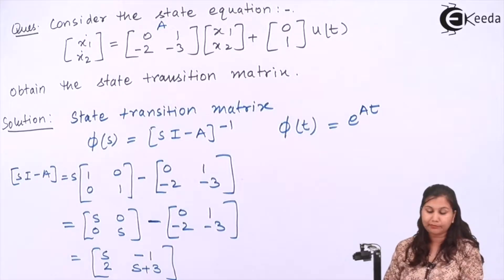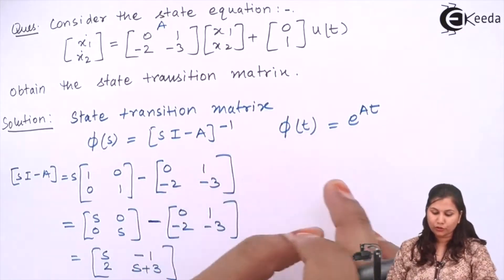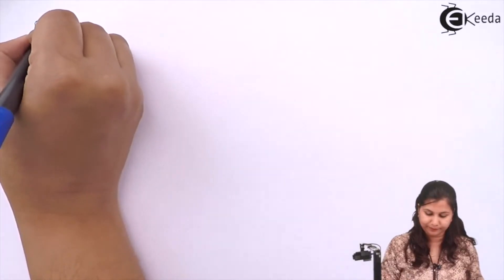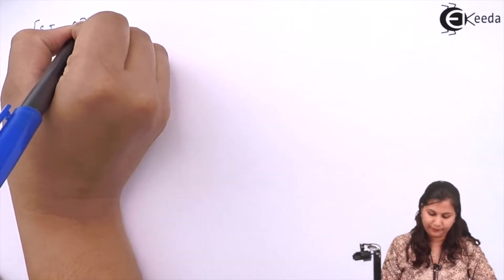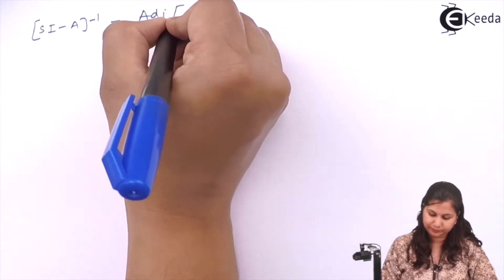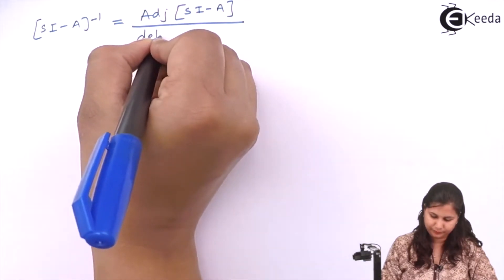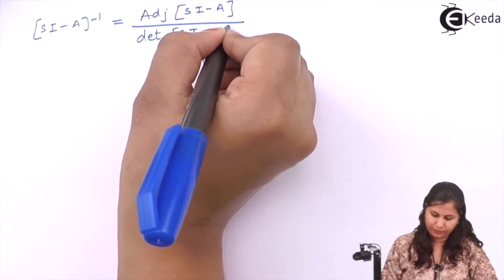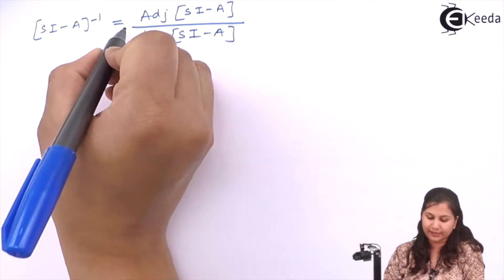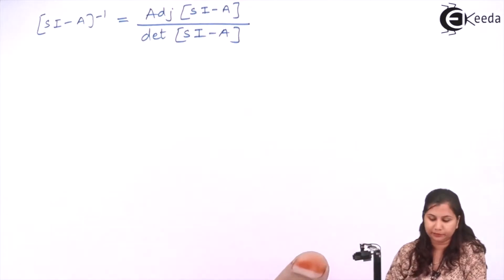Now we have to calculate sI minus A inverse. The inverse of a matrix is calculated as the adjoint of the matrix divided by the determinant of the matrix. So first we will calculate the determinant.